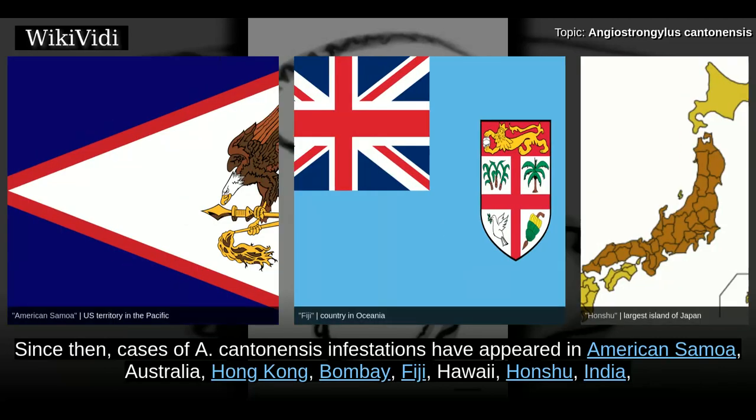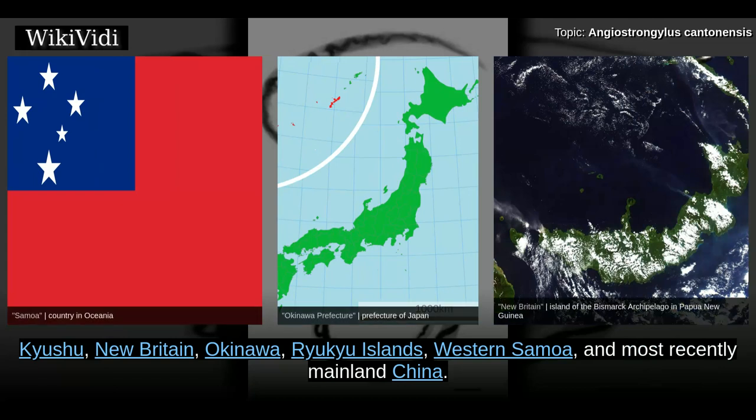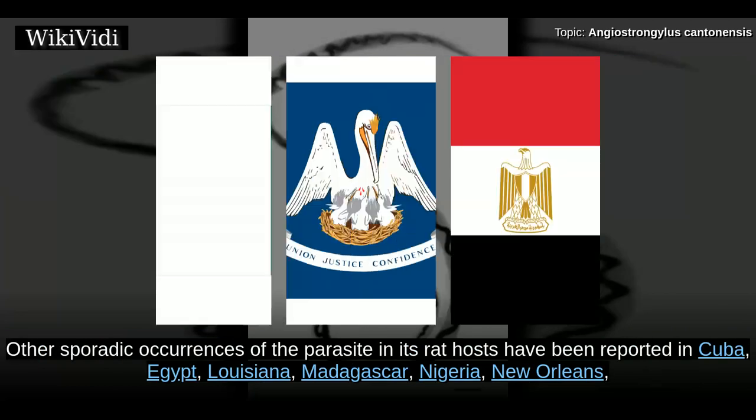Since then, cases of A. cantonensis infestations have appeared in American Samoa, Australia, Hong Kong, Bombay, Fiji, Hawaii, Honshu, India, Kyushu, New Britain, Okinawa, Ryukyu Islands, Western Samoa, and most recently mainland China.